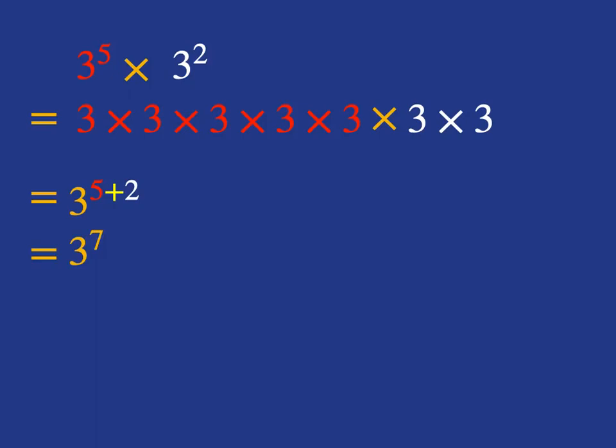You can, of course, skip that second line where you write everything out if you're very familiar with your exponential rules. But I'm going to do the writing it out just so I remind us of where those exponential rules come from. But you could go straight to saying 3 to the 5 times 3 to the 2 is 3 to the 5 plus 2, which is 3 to the 7.